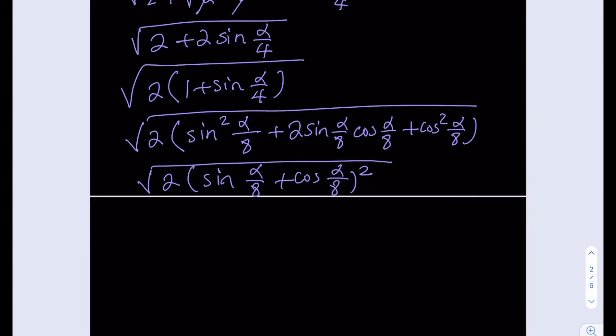We just need to take the square root of that, and since sine(alpha/8) plus cosine(alpha/8) is a positive quantity, it's going to be the square root of 2 multiplied by sine(alpha/8) plus cosine(alpha/8).